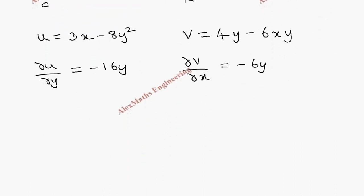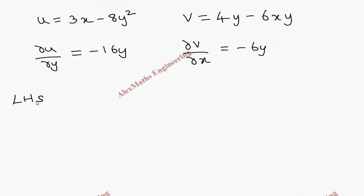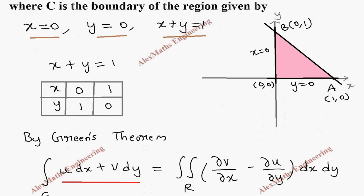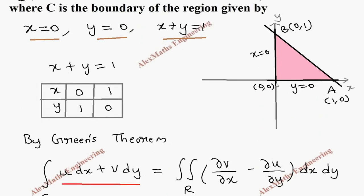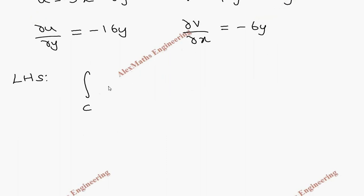Coming to the left-hand side of Green's theorem, we have the integral over the closed curve C. This region has 3 boundaries: OA, AB, and BO. So the closed curve integral is split into 3 parts: integral over OA, plus integral over AB, plus integral over BO.